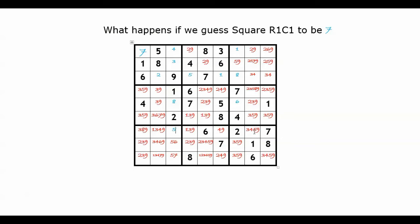We remove 6 from its column. Then we remove 7 from its column, and then we remove 7 from its box.